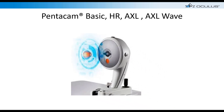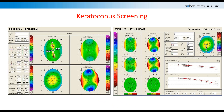Most people who have Pentacams use it for keratoconus screening. But tonight's lecture is called Beyond Keratoconus, so we'll spend only a few moments on that use. The two displays most people are familiar with are the Formap Refractive on the left and the Belin-Ambrósio Enhanced Ectasia Display — better known as the BAD — on the right. These are the two most useful screening displays when ruling out patients for refractive surgery or before cataract surgery, to identify any corneal issues that may become problematic.